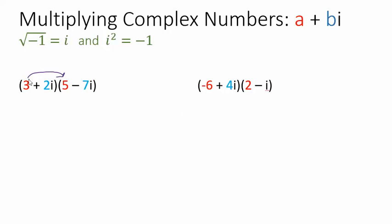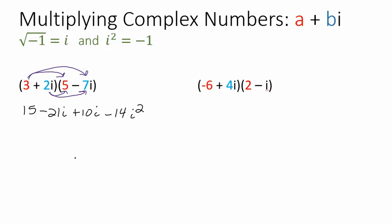So we're going to take 3 times 5, then 3 times negative 7i, then 2i times 5, and then 2i times negative 7i. That gives us 15, minus 21i, plus 10i, and negative 14i squared. We've got four terms, and we can see some like terms with i's. Combining those gives negative 11i. But now we've got this i squared term.